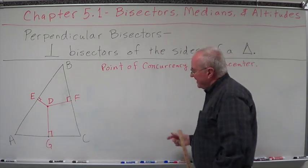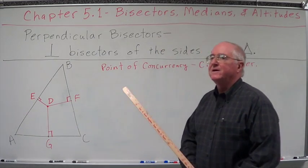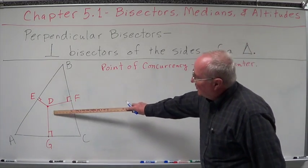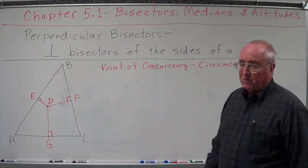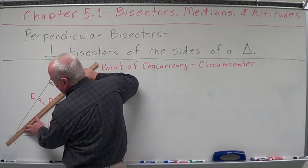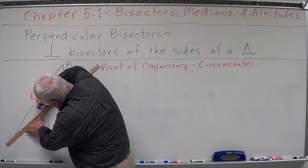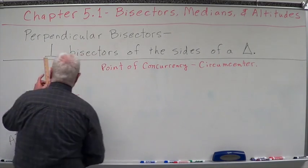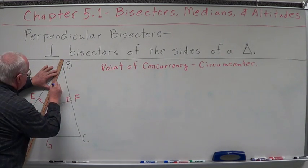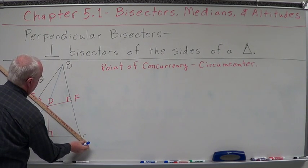Now it's unique in that it has a characteristic, and this is why this can become very complex. The circumcenter — the point of concurrency of perpendicular bisectors — is the same distance from every corner or vertex of this triangle. So if we draw these particular segments in from the vertices to the circumcenter, they are all going to be congruent.